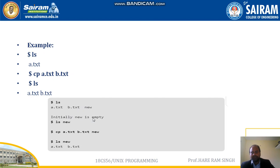Initially the directory new is empty. Running 'cp a.txt b.txt new' copies both files into the new directory. After executing this command, running 'ls new' confirms that both a.txt and b.txt are now present inside the directory called new.